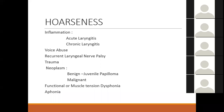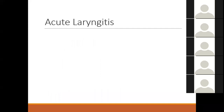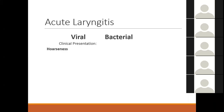Acute laryngitis could be viral or bacterial. In viral laryngitis there will be no fever or only a low fever, tiredness, or a preceding cold. In bacterial laryngitis there will be associated high-grade fever along with hoarseness. In the early phases most laryngitis is viral in origin, and you do not have to start antibiotics if the history is only 24 to 48 hours or a few days. If you examine the larynx, in viral cases the vocal cords will be hyperemic; in bacterial laryngitis they will be very red and swollen.